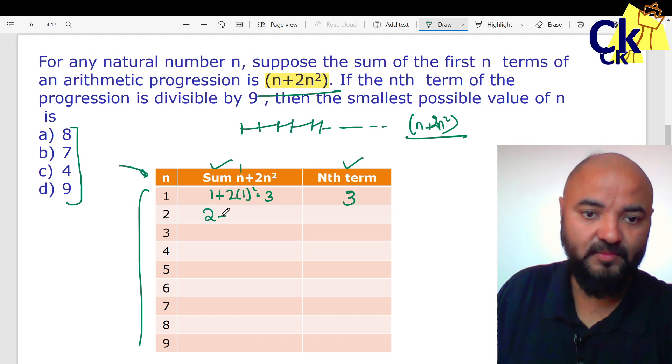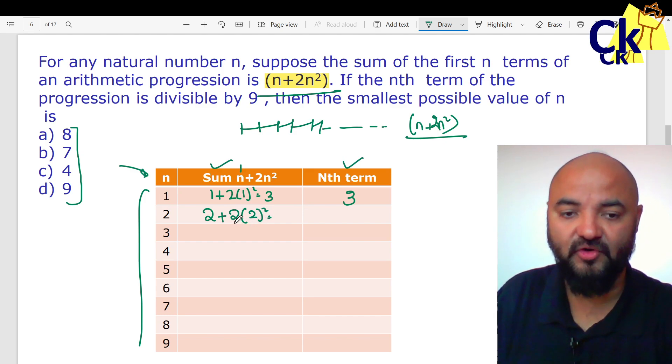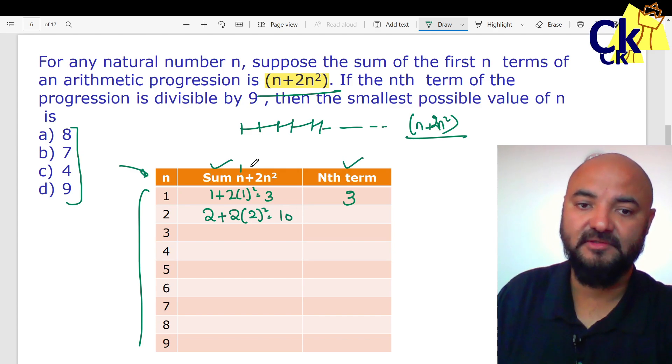If n is put as 2: 2 plus 2 times 2 squared. 2 squared is 4, double is 8, plus 2 is 10. Sum of 2 terms is 10. Second term came out to be 7.